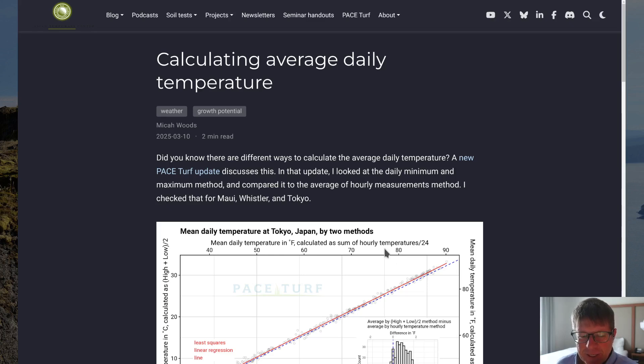This is something that I have looked at extensively for a number of years, and I sometimes calculate this in different ways. So I wanted to share this because this was prompted by a discussion I had with a PaceTurf member, and this PaceTurf member had asked me about the growth potential, and they were getting growth potential at one location that was slightly different from the growth potential that I was getting.